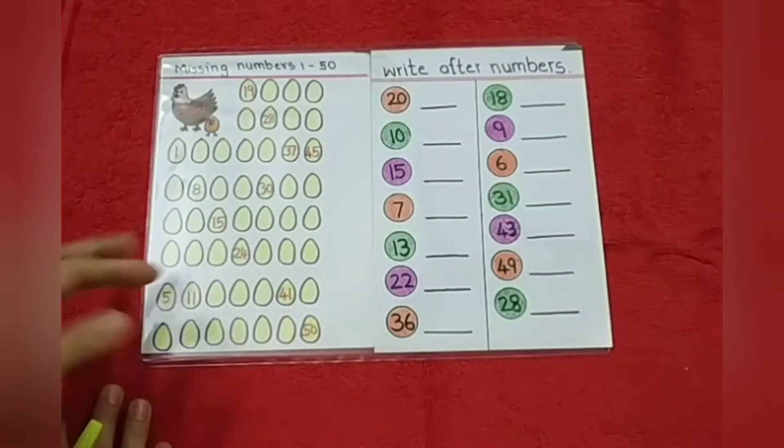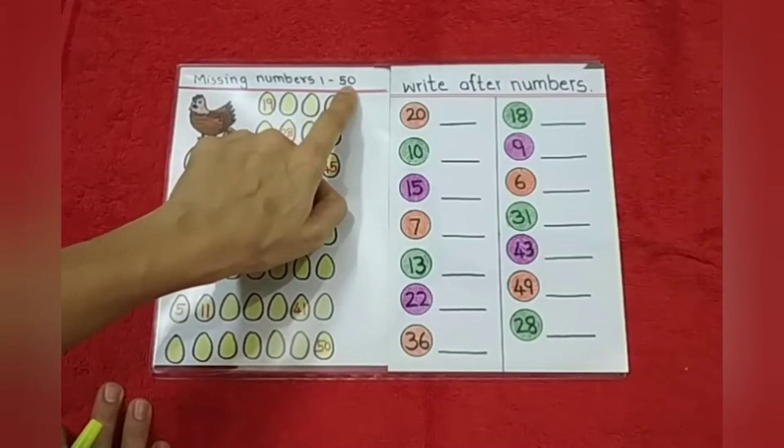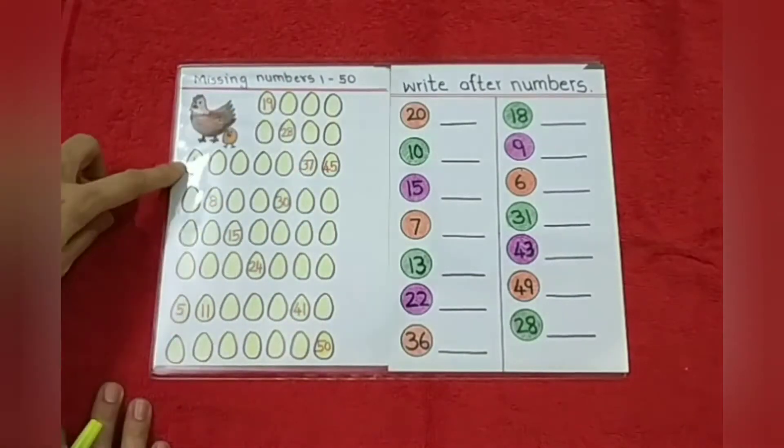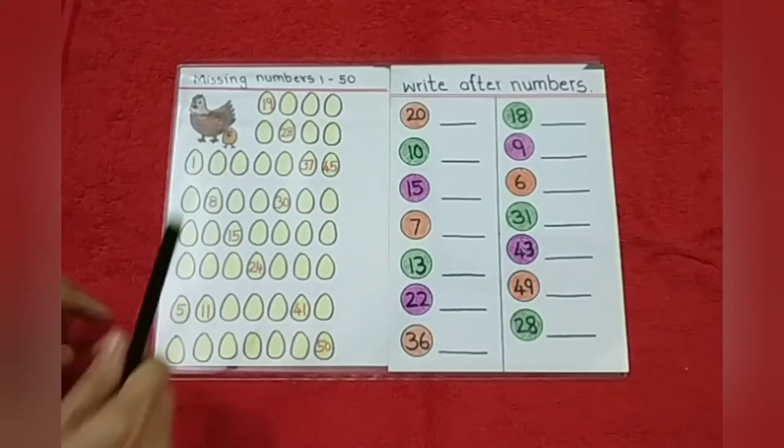Now let's see how to solve this. First is the missing number. LKG Kids will have 1 to 50 numbers. So it's very easy. They just have to write the missing numbers here and this way they can complete these worksheets.